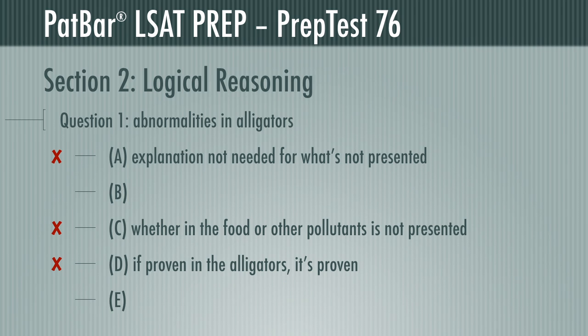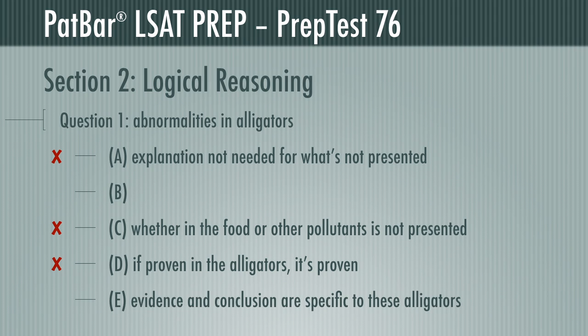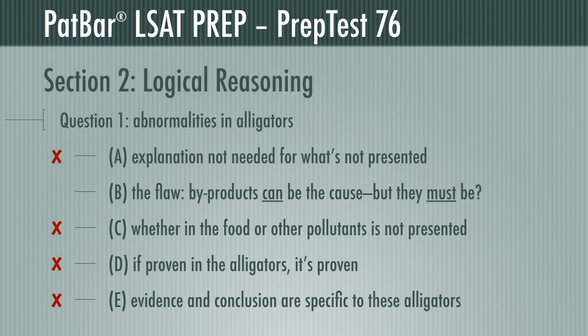Not only is E irrelevant, but it makes no sense. We're presented with evidence and a conclusion specific to these alligators, not whether they are somehow representative. To be vulnerable to criticism, the response would need to find the flaw — that because byproducts can cause the observed abnormalities, therefore they must. There is no suggestion that this is the only cause. B is the correct response.